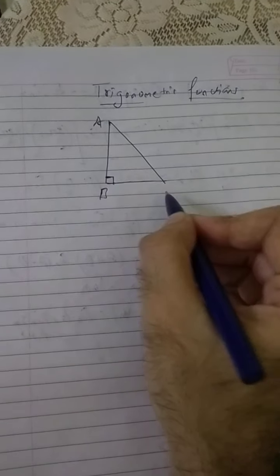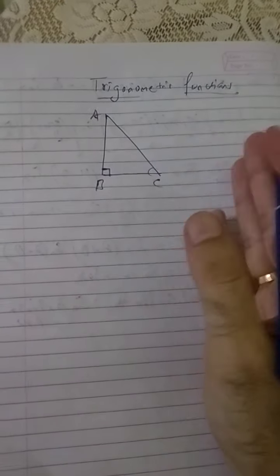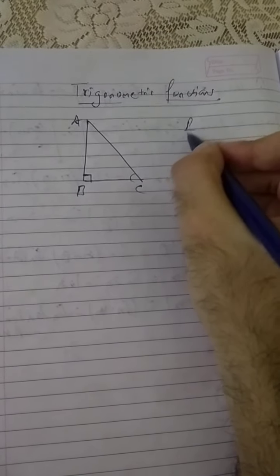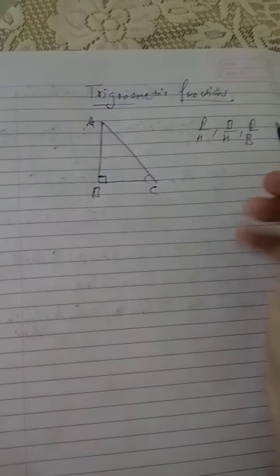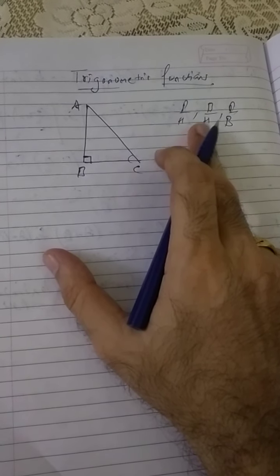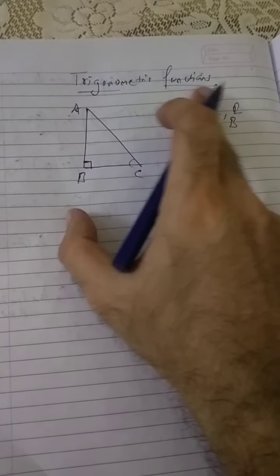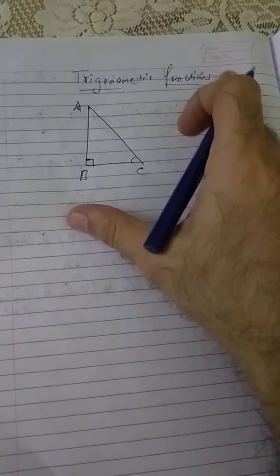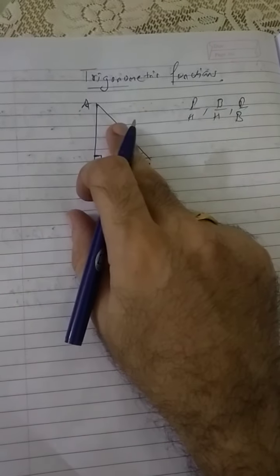If you remember: sine, cosine, tangent, cosecant, secant, cotangent, and their particular way of writing—perpendicular by hypotenuse, base by hypotenuse, perpendicular by base and so on. But there they were ratios actually, that's why we called them trigonometric ratios. But now the same thing is getting converted into a function.